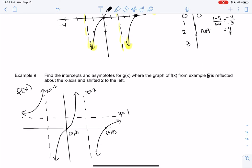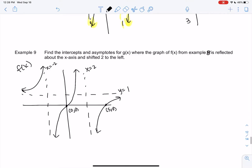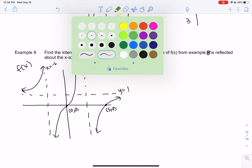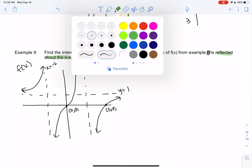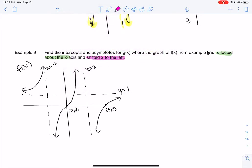And y equals 1. And what we're going to do is we're going to reflect it about the x-axis and we're going to shift it 2 to the left. So let's do one at a time.